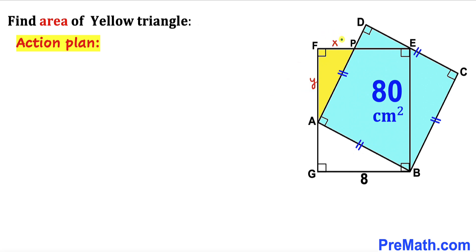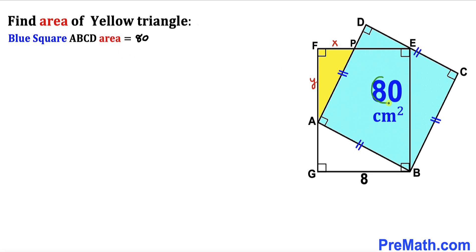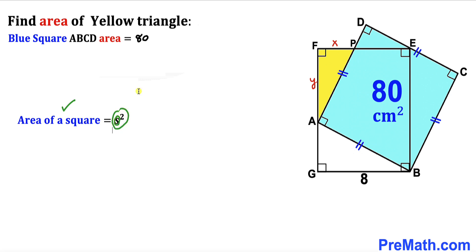Our task is to find the value of X and the value of Y. We know the area of the blue square is 80. Recalling the area of a square formula: Area = S², where S is the side length. So we can write S² = 80.